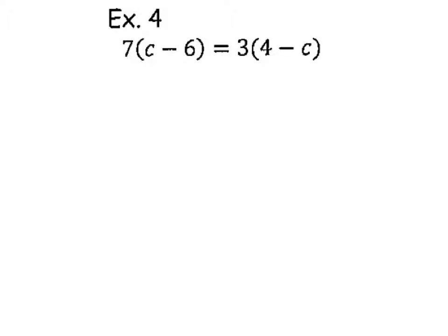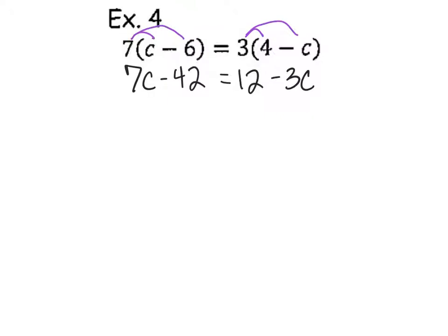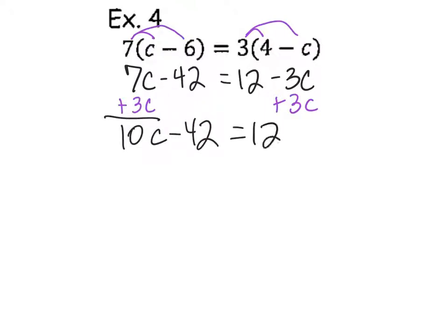Simple distributing. Distribute the 3. Do it with the people at your table. Please don't do 42 plus 3C. 42 is not ever going to go with 3C because 3C has a variable — a C. 42 doesn't have a C. They're not going to hang out. C is a backpack; 42 does not have a backpack. So the result is 10C minus 42 equals 12. Does my paper look like your paper? Good job — that means you are awesome.